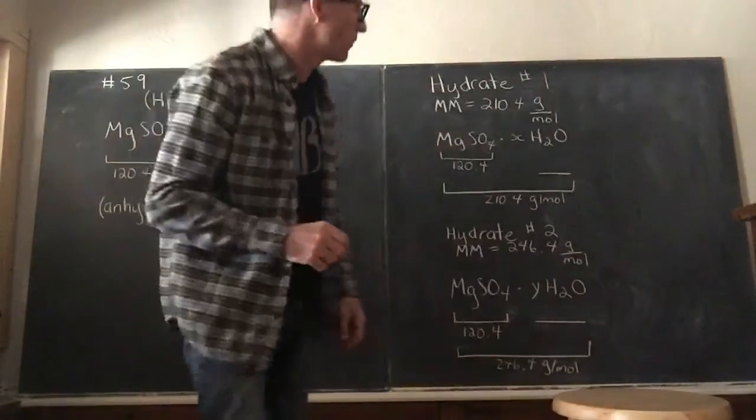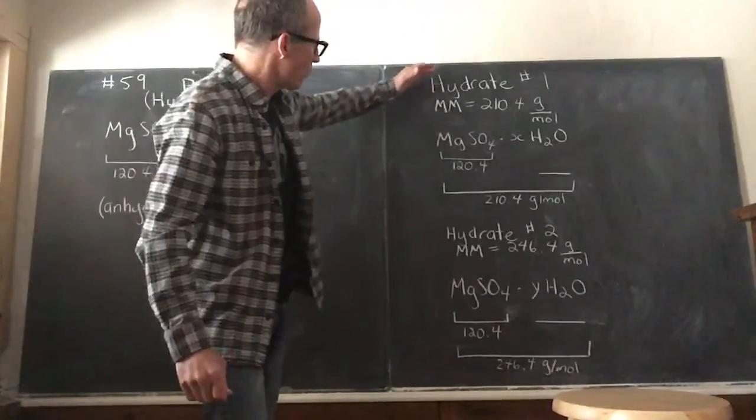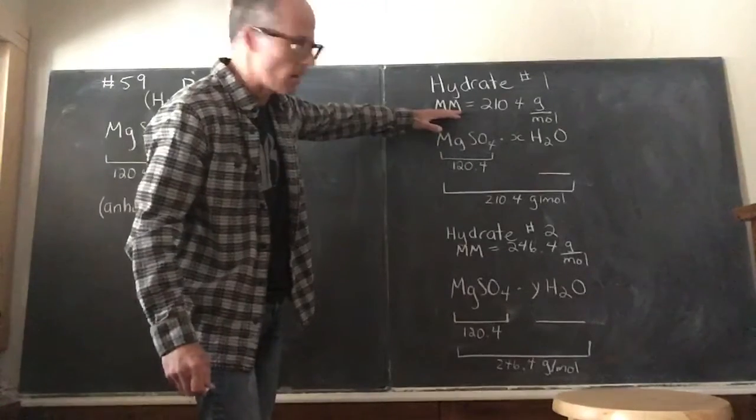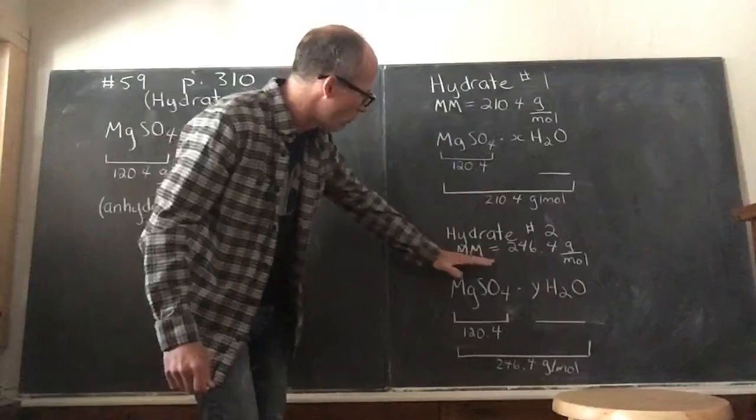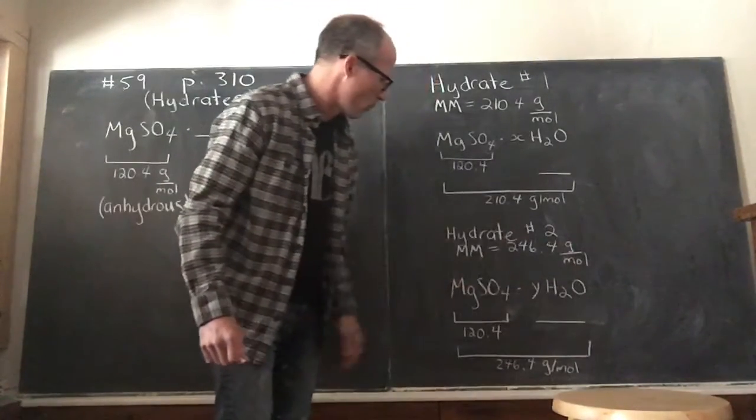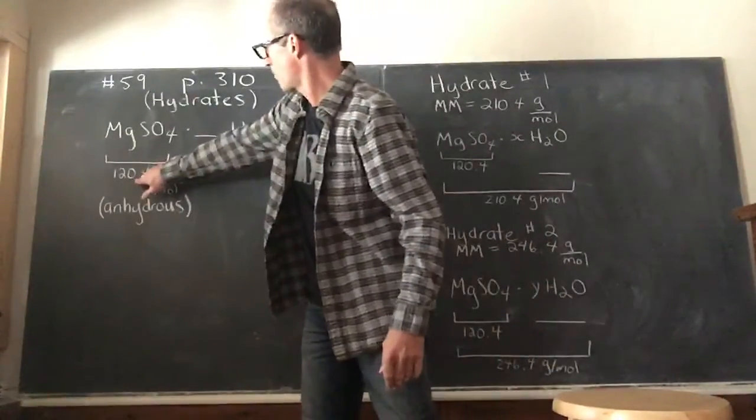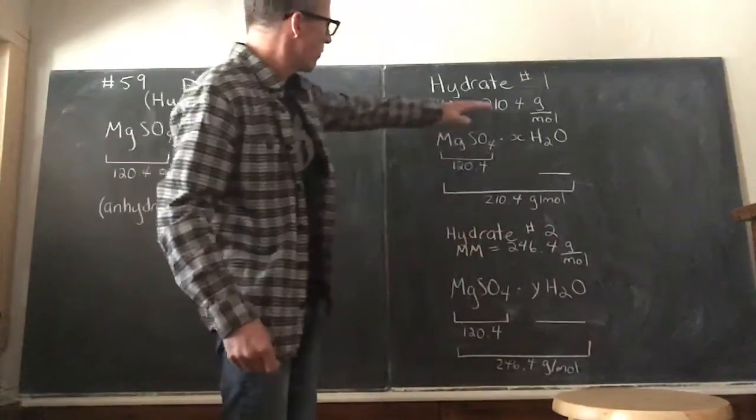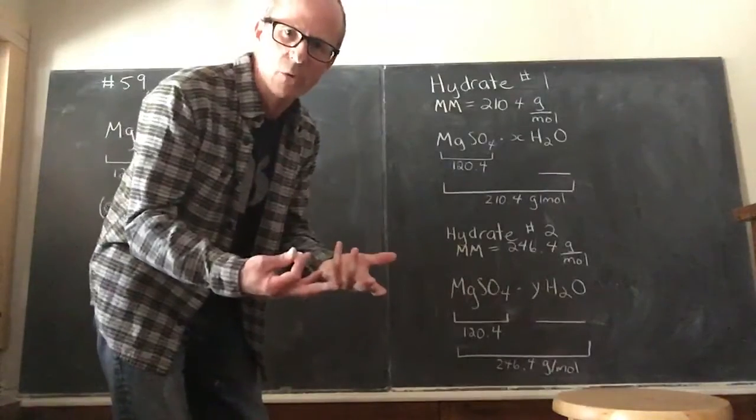In this question, they're actually giving you some data that's very helpful. Hydrate one, they give you the molar mass to be 210.4 grams per mole, and hydrate two, they're letting you know the molar mass is 246.4 grams per mole. Well, both of these numbers are higher than the 120.4, which makes sense because the rest of the molar mass would have to be made of the water, and that's the key to the question.